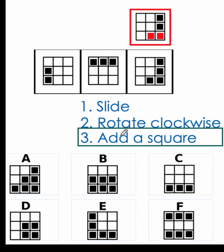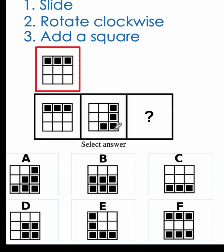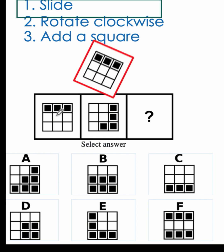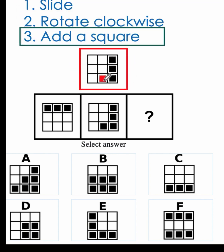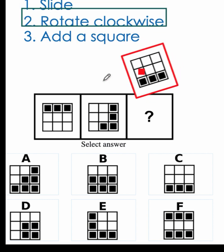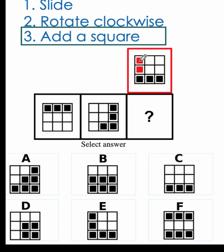Our rules are really working. So we can now use the same rule to answer our IQ question. We begin by replicating the first picture, then slide it to the right, rotate clockwise, and add a red square. And so we now have our final answer, and that is letter E. Thank you very much.